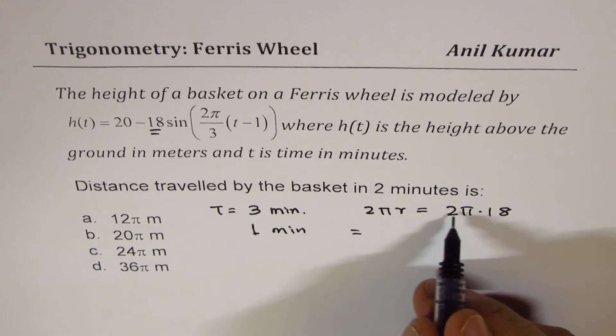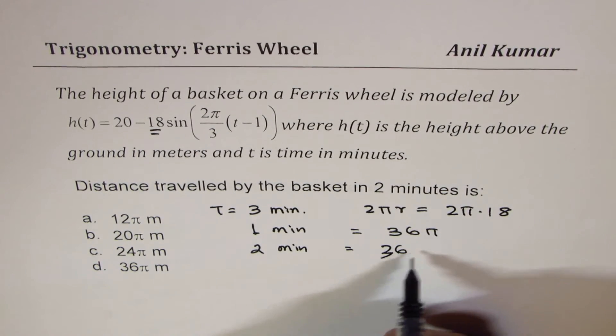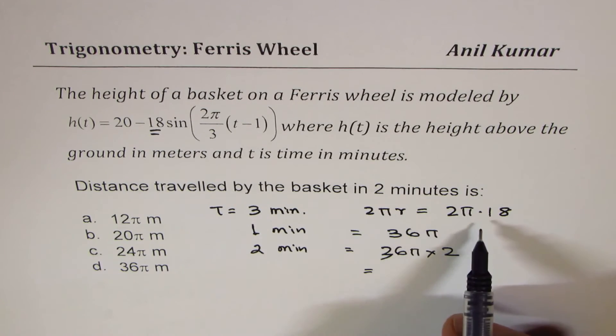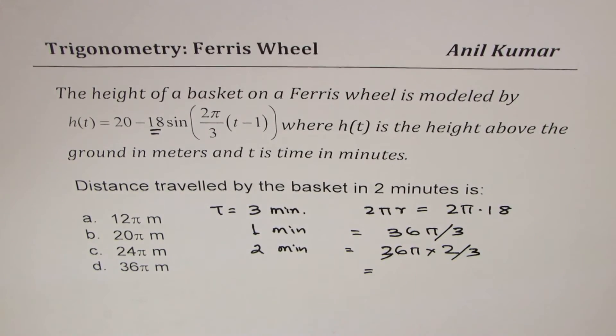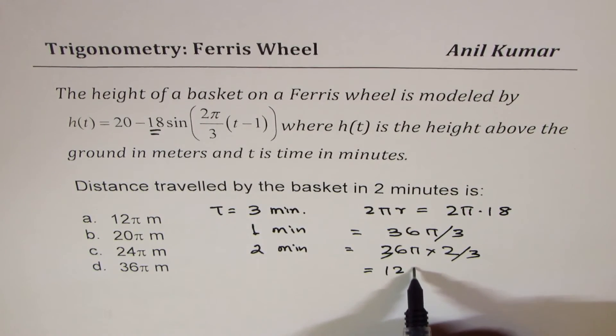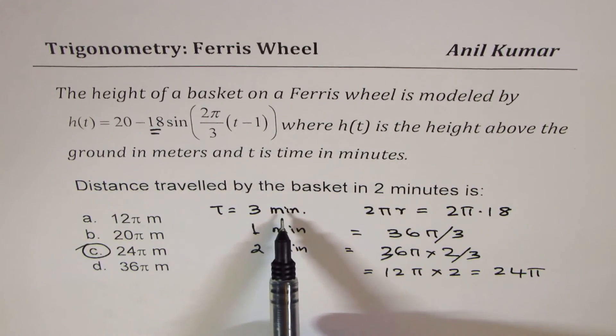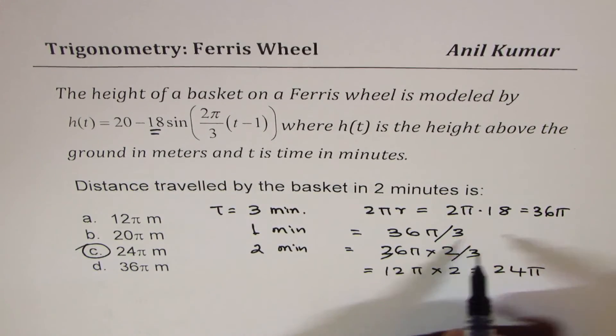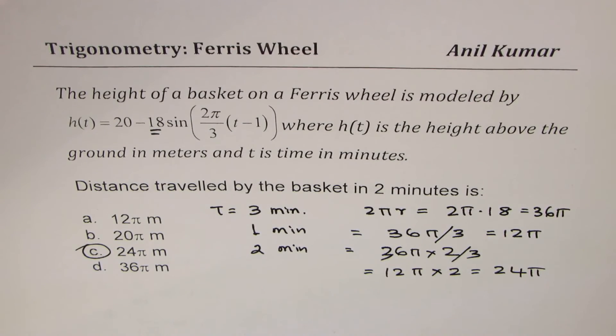And in 2 minutes, it is going to travel twice. So 36π times 2, which gives us, so 2πr in this. So 36π, in 1 minute, it is 36π over 3. And then it will be this divided by 3, which gives us 12π times 2, and which is 24π. So the answer is C, which is 24π. So in 3 minutes, it travels 36π. Let me write here, 36π. In 1 minute, 36π divided by 3, which is 12π. And then in 2 minutes, 12 times 2, which is 24. Perfect. So it travels so much, and the units are going to be meters, as mentioned here.